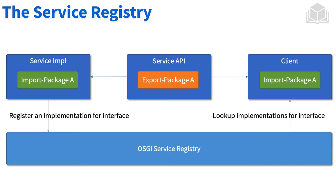Here's an example diagram. Starting at the service implementation — the service implementation is the one implementing the service API. Within the service implementation, there is a component that implements the interface from the service API. The service API exports the package containing the interface itself. The service implementation imports that package, allowing us to use the interface within the service impl bundle. We then create a Java class that implements the imported interface and use the @Component annotation to declare to the OSGi container, and in turn to the OSGi service registry, that we have a component whose function is to implement this interface.